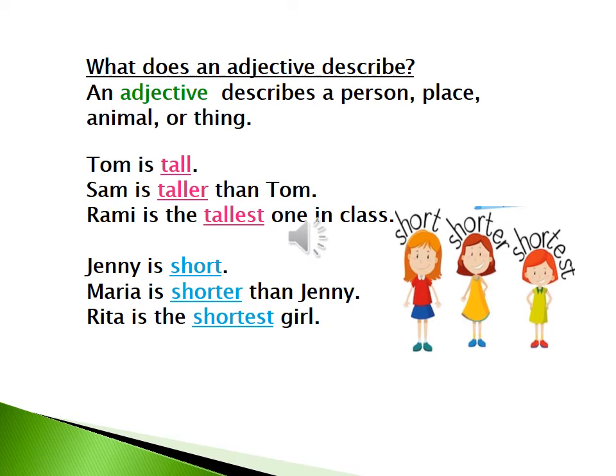Now, let's read the sentences below and find the adjectives. Tom is tall. Where is the adjective? Tall. Sam is taller than Tom. Where is the adjective? Taller.